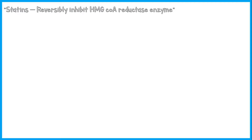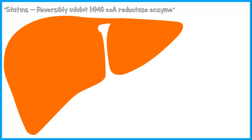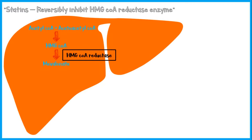Cholesterol synthesis takes place within the liver. At first, two acetyl-CoA molecules combine together to form acetoacetyl-CoA. Then this acetoacetyl-CoA molecule binds with another acetyl-CoA molecule to form HMG-CoA. Then HMG-CoA is converted to mevalonate by the enzyme HMG-CoA reductase — this is the rate-limiting step of the cholesterol synthesis pathway. Ultimately, mevalonate is converted to cholesterol after several steps.